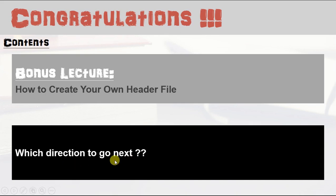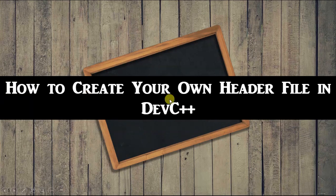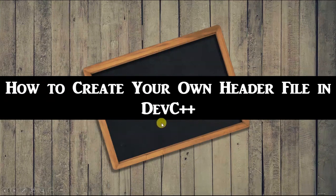I thought of giving good guidance so that students won't be confused about which direction to follow. First, we will cover the bonus lecture and then look at what to do next after this course. Let's move towards our bonus lecture — how to create your own header file in C++, which is an extremely important topic normally discussed in advanced C++. Now we look at the steps required to create your own header file.